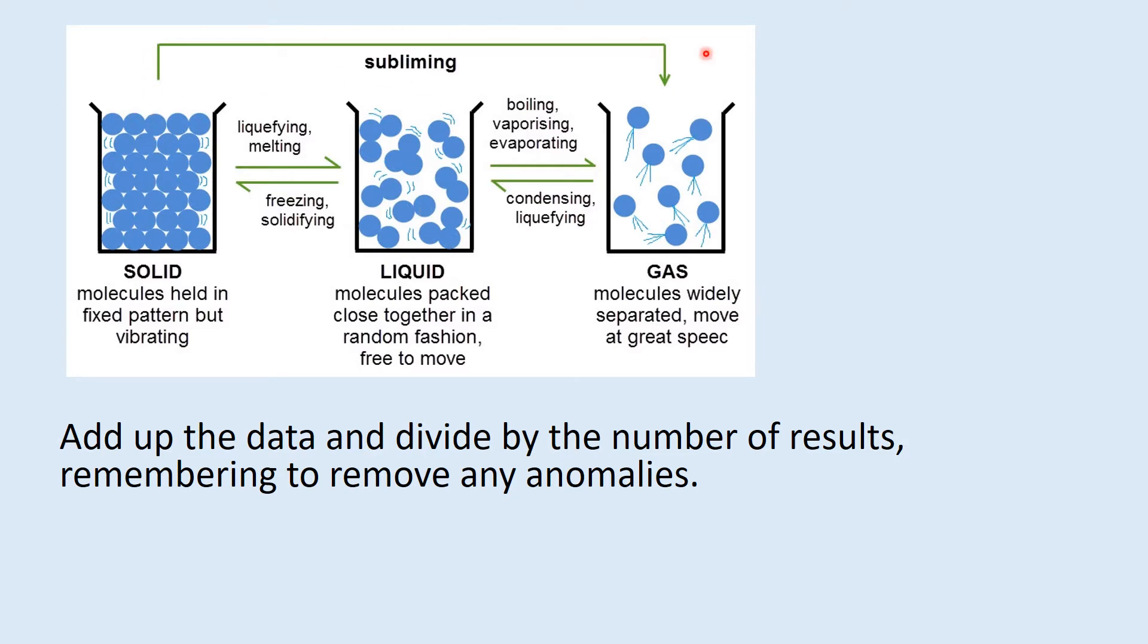Going from a solid directly to a gas is called subliming. You don't technically need to know that but it's a useful bit of knowledge. Something you might have heard of that sublimes is carbon dioxide or dry ice. When it's in its solid form it will go straight to a gas, which is what is used in fire extinguishers and smoke machines. The second part, as you know, to calculate mean, add up all your data and divide by the number of results but remember to remove those anomalies.